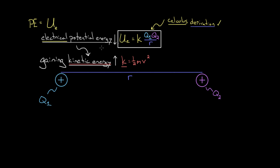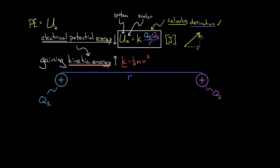Here's something that used to confuse me: is this the electrical potential energy of Q1, or of Q2? The best way to think about it is that this is the electric potential energy of the system of charges. You need two of these charges to have potential energy at all — if you only had one, there would be no potential energy. Since this is an electrical potential energy, and all energy has units of joules in SI units, this will also have units of joules. Something else important: this electric potential energy is a scalar — it is not a vector. There's no direction; it's just a number with a unit telling you how much potential energy is in the system. When things are vectors you have to break them into components, but that's not the case with electric potential energy — there will never be any components.